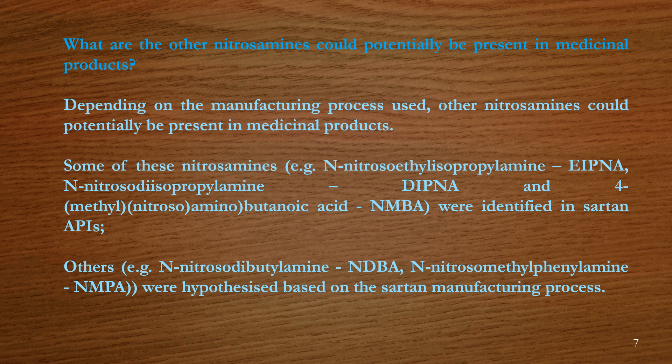What other nitrosamines could potentially be present in medicinal products? Depending on the manufacturing process used, other nitrosamines could potentially be present. Some of these nitrosamines — for example, N-nitrosoethylisopropylamine (EIPNA), N-nitrosodiisopropylamine (DIPNA), and N-methyl nitrosoaminobutanoic acid (NMBA) — were identified in sartan APIs.